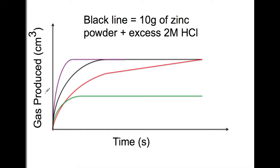First of all we're going to look at the purple line. The purple line you can see here is steeper than the black line. This means the purple line must be faster. So there are a few ways that this could happen. We can see here that we are ending at the same point as the black line which means we're getting the same volume of gas produced.